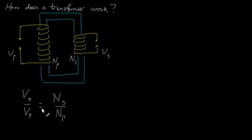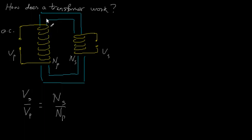But how does this actually come about? How does a transformer work? First, we need to know that this voltage must be an AC voltage — it doesn't work for a DC voltage. It works by electromagnetic induction, because the changing current causes a changing magnetic field, and this magnetic flux from the first coil goes through the second coil. As the flux changes, it induces a voltage in the second coil.